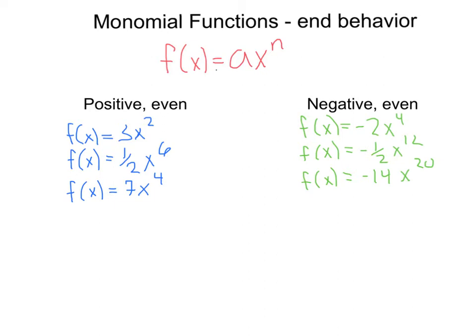What's good about monomial functions is, based on the a and the n here, this is a monomial function f(x) = ax^n, anything of this form, we can pick out certain patterns based on whether the a is positive or negative, and based on whether the n is even or odd.